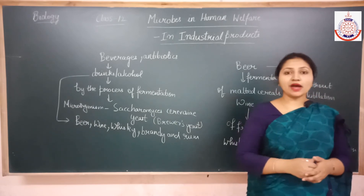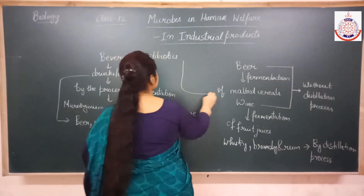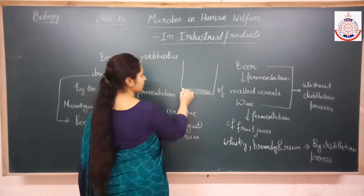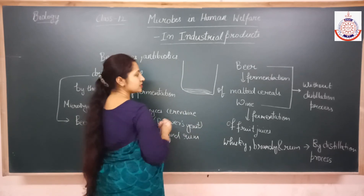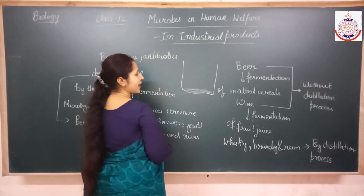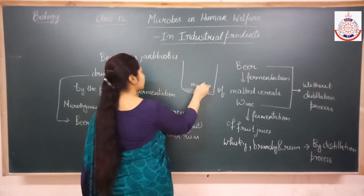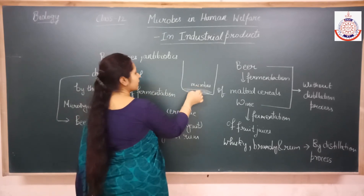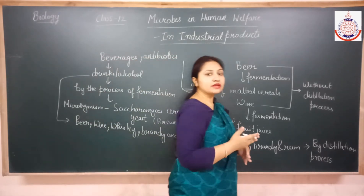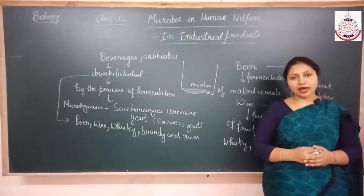Bioreactors are of very large size. The raw material, like malted cereals or fruit juices, is put into the fermenters along with the microorganisms. The microbes then ferment the raw material and the industrial products are produced. In this manner, beverages, drinks, or alcohols are produced in the fermenters or bioreactors.